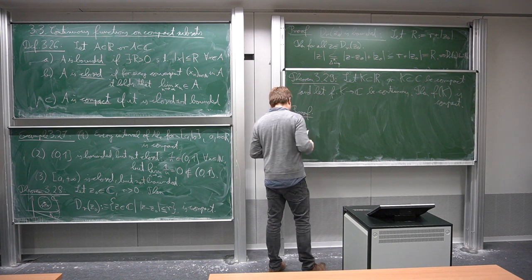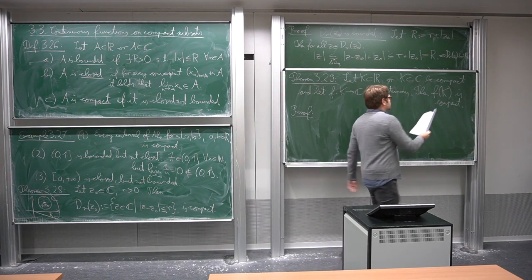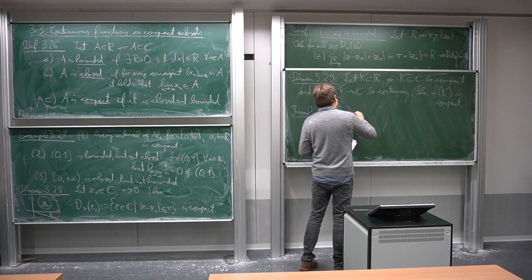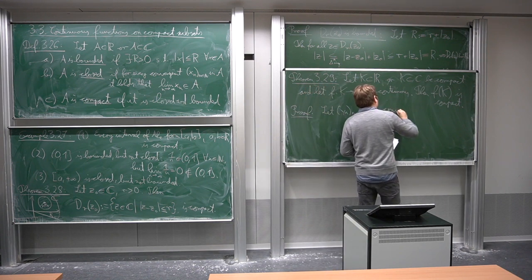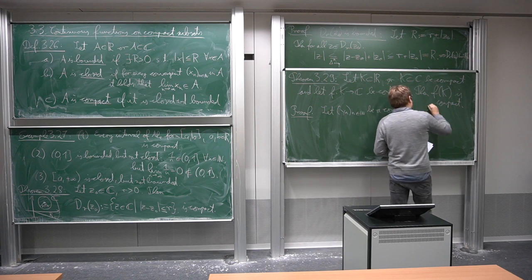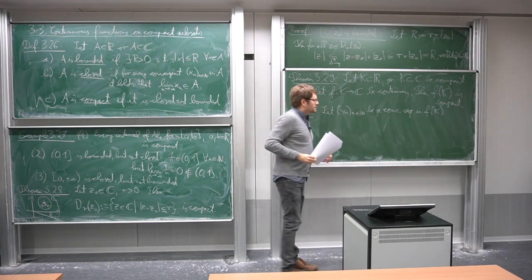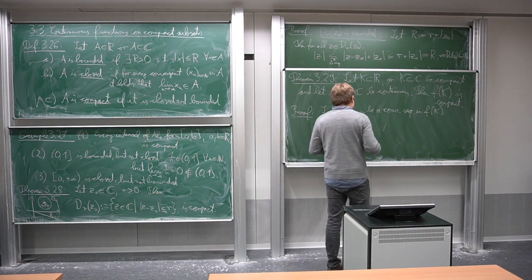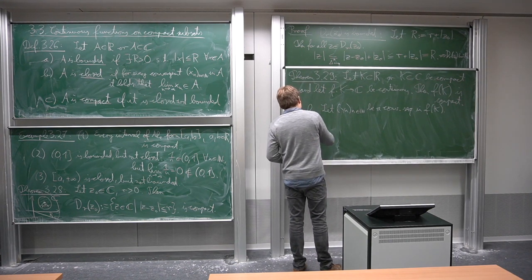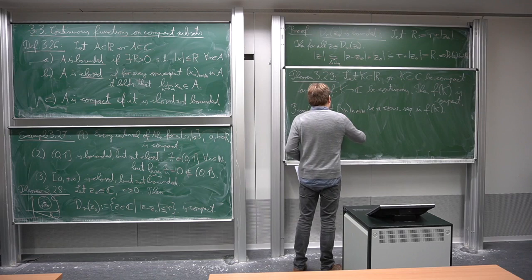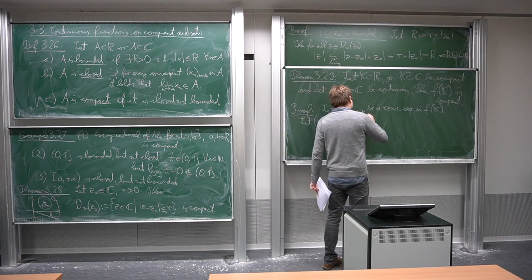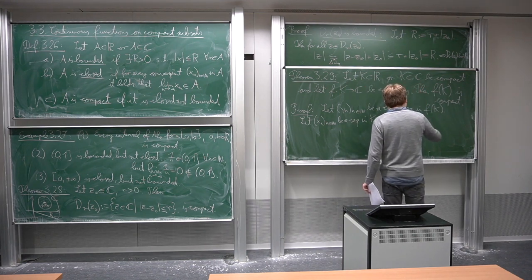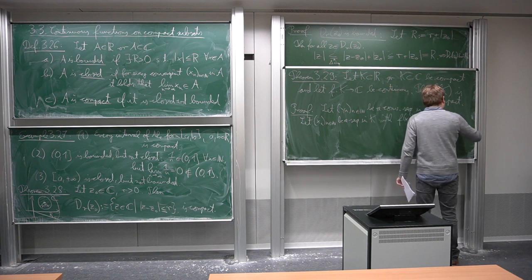To prove this we use sequences. We first show f(K) is closed. Let y_n be a convergent sequence in f(K). We need to show the limit again lies in f(K). By definition of the image, we can find a sequence x_n in K with f(x_n) = y_n for every n — a pre-image sequence. K is bounded, which implies x_n is bounded.